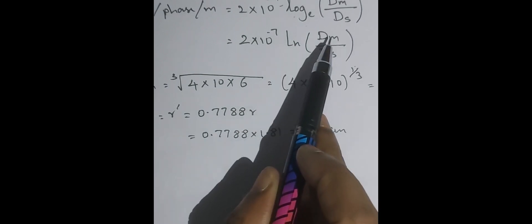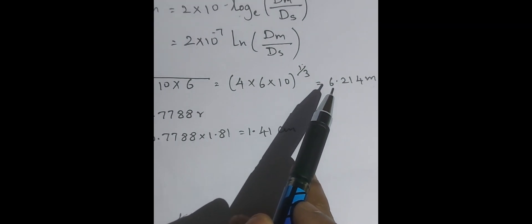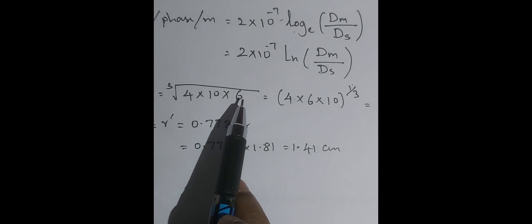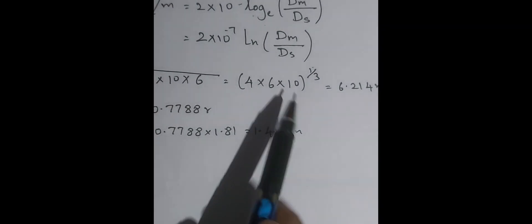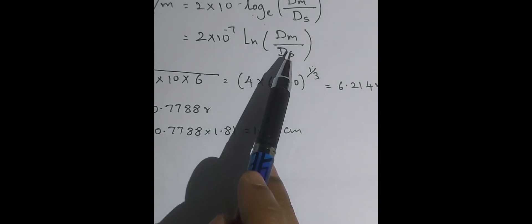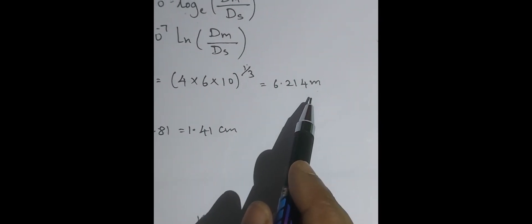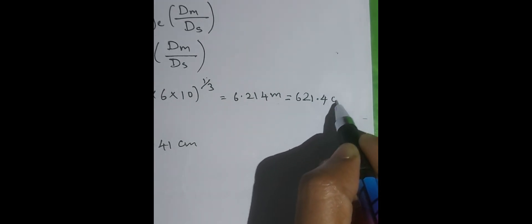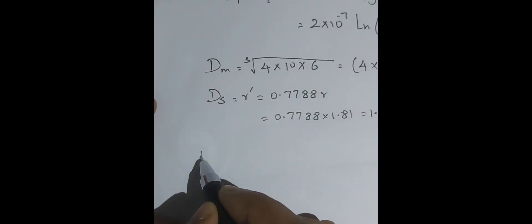Now we substitute into the formula: L = 2 × 10⁻⁷ × ln(dm / ds). Notice dm is in meters (6.214 m) and ds is in centimeters (1.41 cm). We must use the same units. It is better to convert dm from meters to centimeters by multiplying by 100, giving 621.4 centimeters. Now both dm and ds are in centimeters.